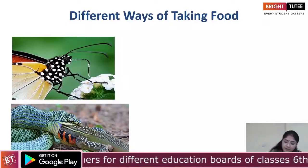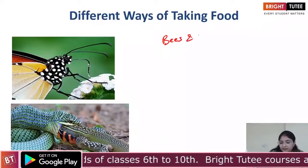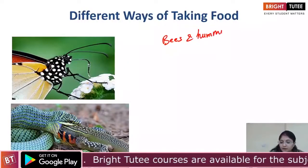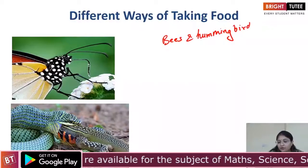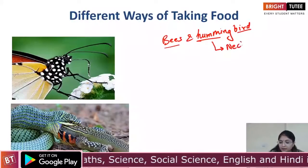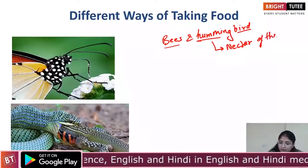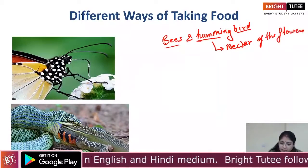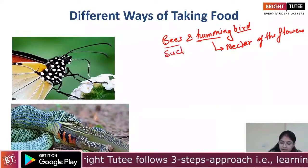For example, bees and hummingbirds feed on the nectar of flowers, and how do they do that? They suck the nectar.